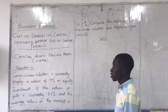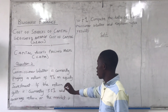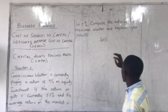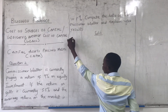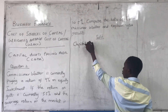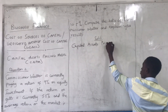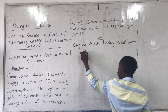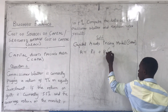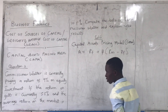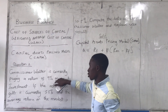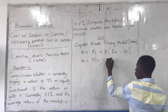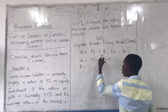Question Two: Commercial Water is currently paying a return of 9% on equity investment. If the return on gilt is currently 5.5% and the average return on the market is 10.5%, compute the beta of Commercial Water and explain your results. So K = 0.09. We are not given beta — we are asked to find beta.